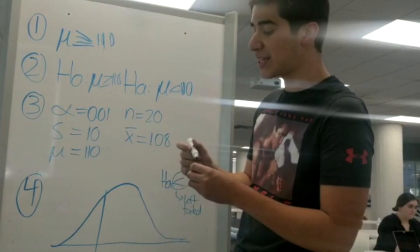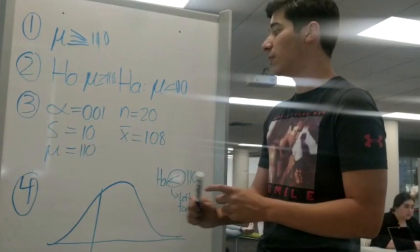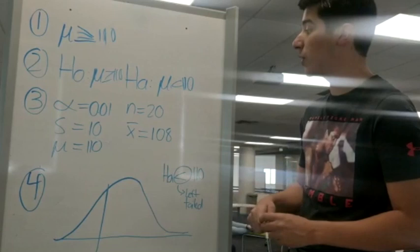The next step is to arrange data. And the arranged data from the problem, we have the significance level is 0.01. The standard deviation of this sample is 10. The mu is 110. The number of people that participate in the sample, there are 20. And the sample mean is 108.